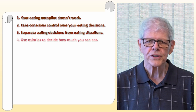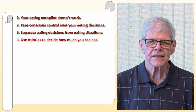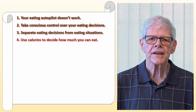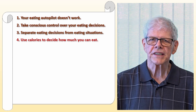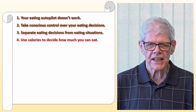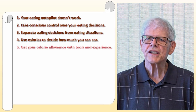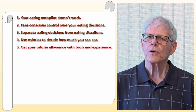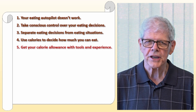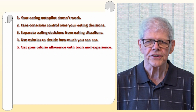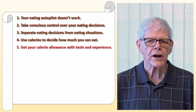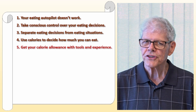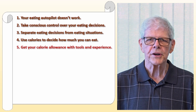Your autopilot won't do a good job of telling you what to eat and how much to eat. You need objective criteria to plan your eating. The main objective criterion is calories. You need a daily calorie allowance. You can determine a starting point by using a tool such as the Mayo Clinic calculator to estimate your daily calorie usage and then subtracting approximately 500 calories from that number. You need to adjust your daily calorie allowance based upon experience.